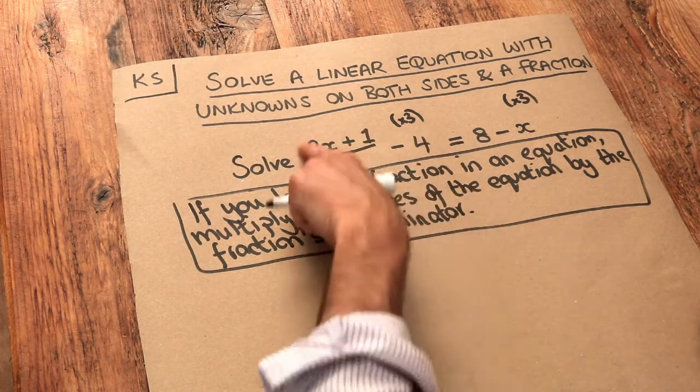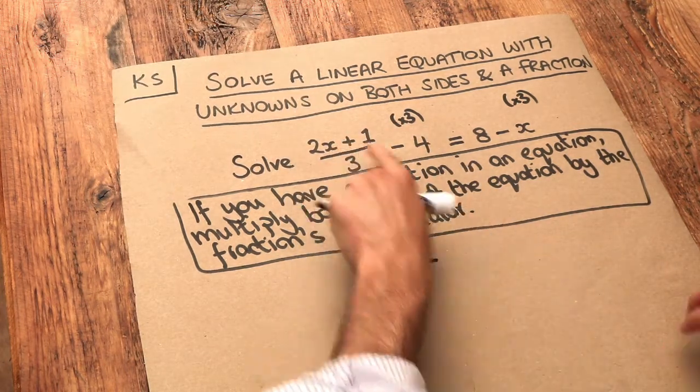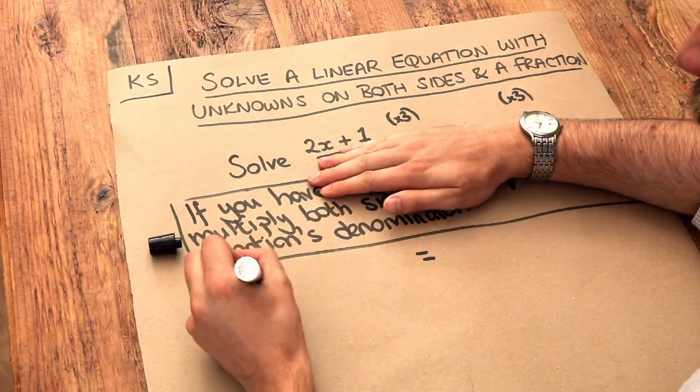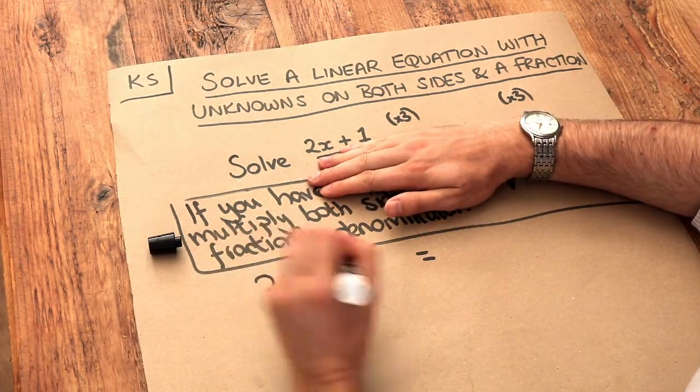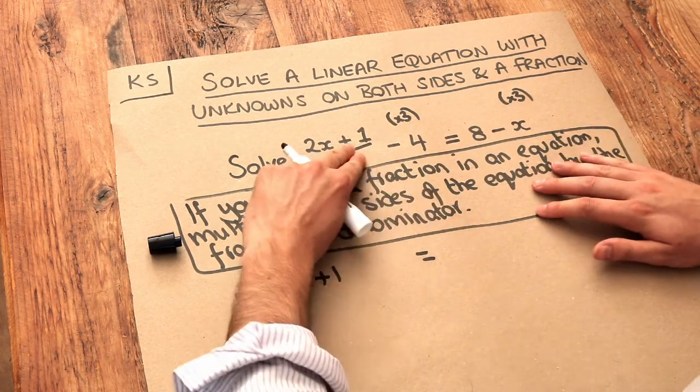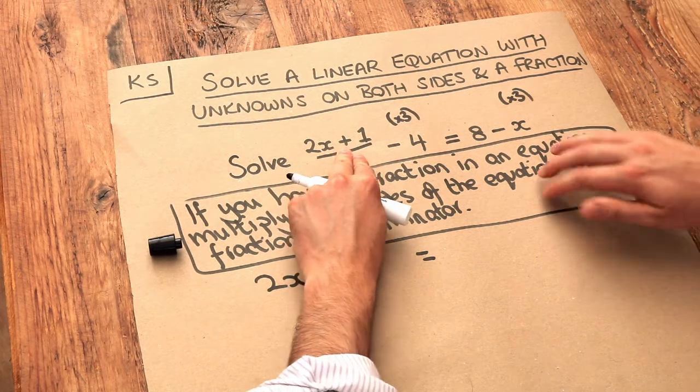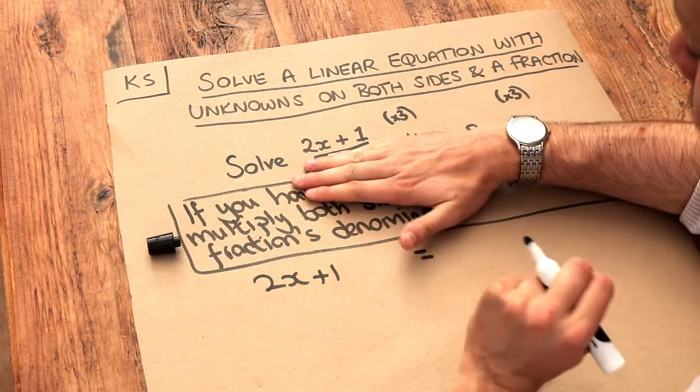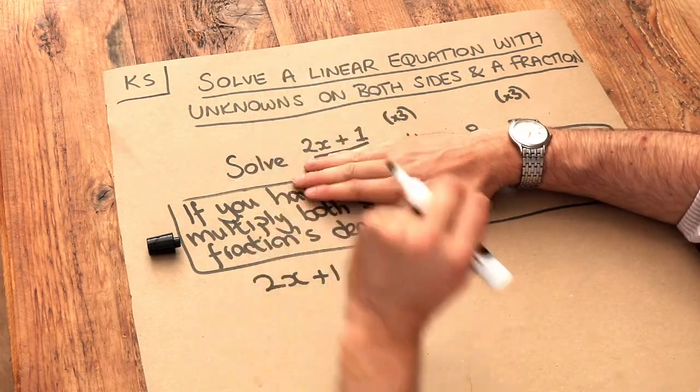Now if we multiply the left hand side by 3, then multiplying this fraction by 3 just gets rid of the over 3, and we're left with 2x plus 1. A mistake that a lot of students make is that they multiply by 3 to get rid of the 3, but then they multiply by 3 again and say that it's 6x plus 3. But multiplying by 3 just gets rid of that over 3, it doesn't times by 3 again.